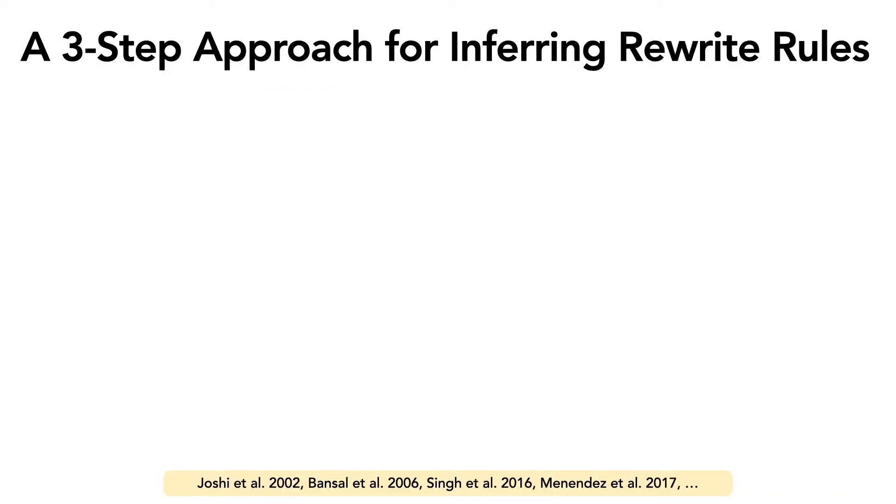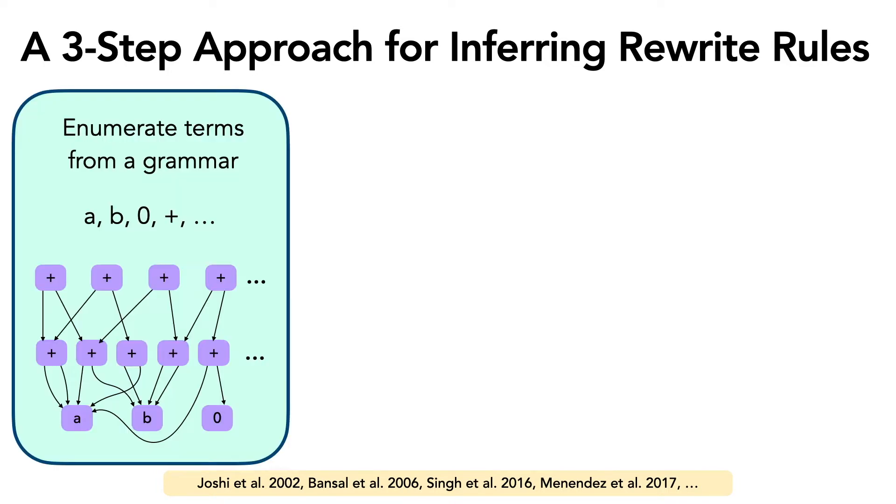So to mitigate these problems, prior work has focused on automatically inferring rewrite rules. These techniques broadly follow a three-step approach. First, they enumerate terms from the grammar of some domain. For example, here we have a very small grammar with the plus operator, two variables and a constant. We only see a small subset of the terms till depth 2 that you can generate by exhaustive enumeration over the grammar.